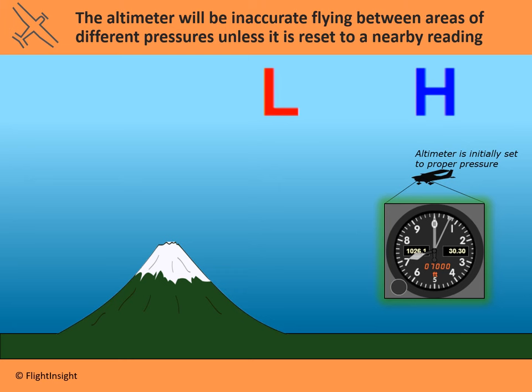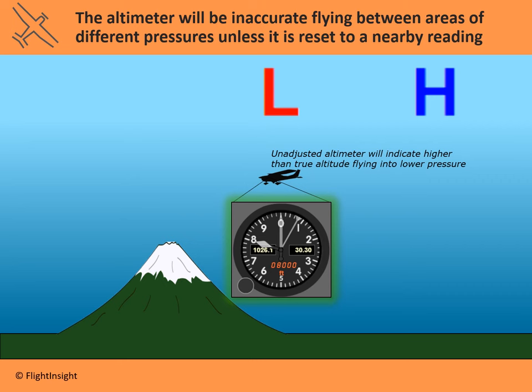Where altimeter errors can really become an issue is flying from an area of different pressures — for example, from an area of high pressure to low pressure. The change in pressure will erroneously read as a change in altitude unless you reset the altimeter periodically. Starting out indicating 7,000 feet in an area of relatively high pressure, the aircraft flies into an area of reduced pressure. That drop in air pressure is going to be read as if you've climbed in altitude.